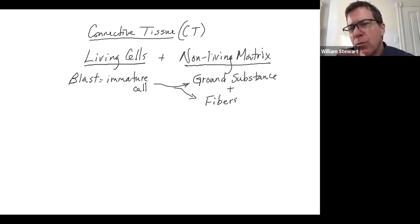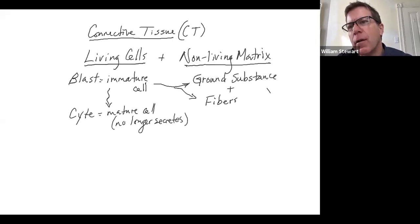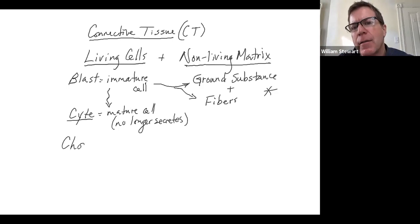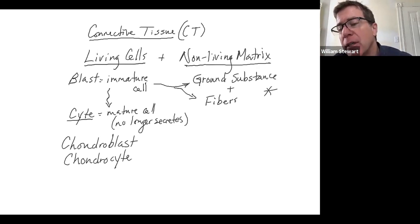When that immature cell stops secreting, it matures into a mature cell, designated with the suffix 'cyte,' and it no longer secretes. Think: young cells, called blasts, secrete the ground substance and fibers; when they stop secreting, they become mature cells ending in 'cyte.' A chondroblast is an immature cartilage cell that secretes ground substance and fibers; a chondrocyte is a mature cartilage cell that just maintains the matrix. An osteoblast is an immature bone cell; an osteocyte is a mature bone cell.